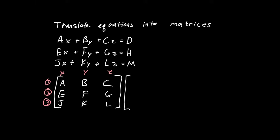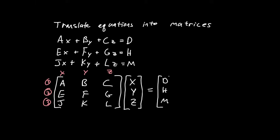Next, that first matrix is multiplied by a variable matrix x, y, z. If you haven't covered matrix multiplication before, this may seem a little odd. But with matrix multiplication you're multiplying this row by this column, then this row by this column, then this row by this column, and we end up getting back to those three expressions. Last, we have our constant matrix: d, h, and m — just those three constants in the same order.